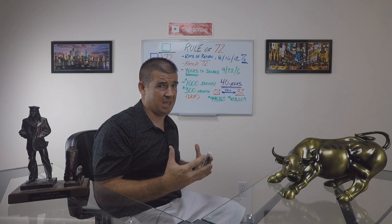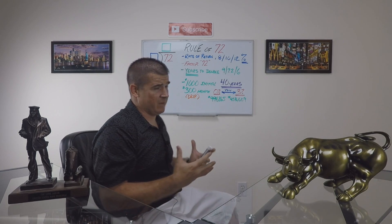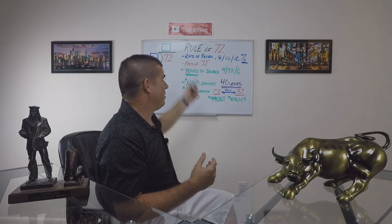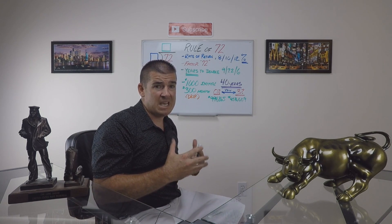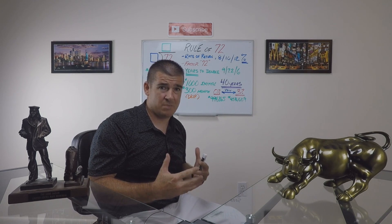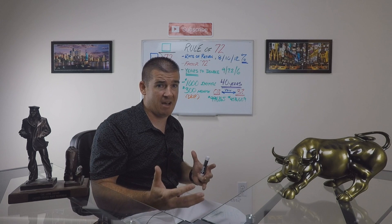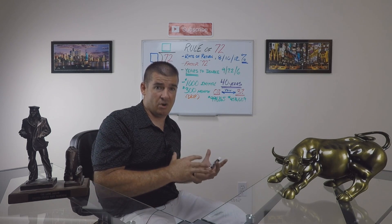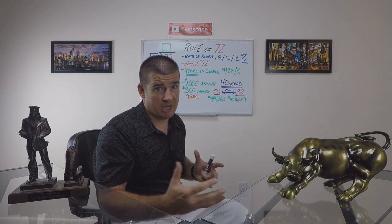First thing that you need to understand is: what is the Rule of 72? The Rule of 72 is something that we can employ to understand, with a given rate of return or a projected interest rate on a particular investment, how many years it will take for that investment to double. By understanding how many doubling cycles we can have — say, for example, in your early 20s — how many doubling cycles could you actually get on your money and what could that mean in the future?